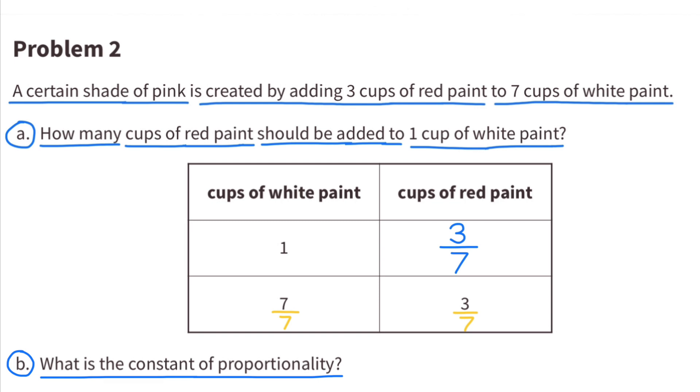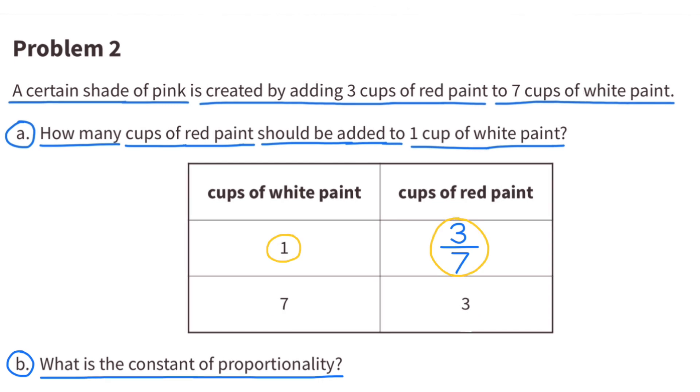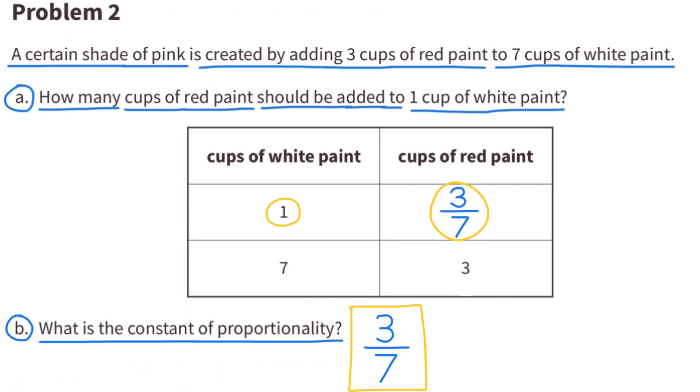B. What is the constant of proportionality? Since there is 1 cup of white paint for every 3 sevenths cups of red paint, the constant of proportionality is 3 sevenths.